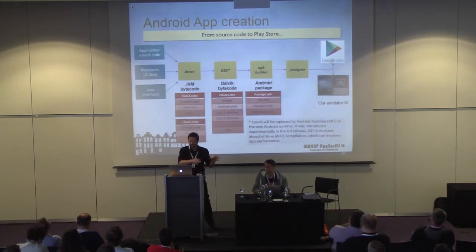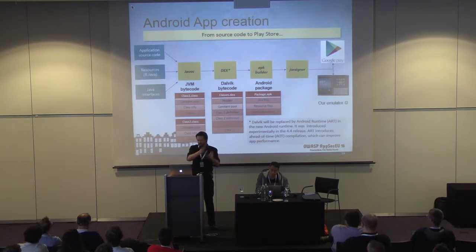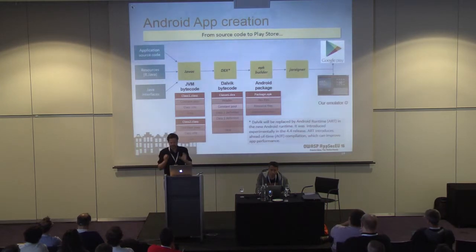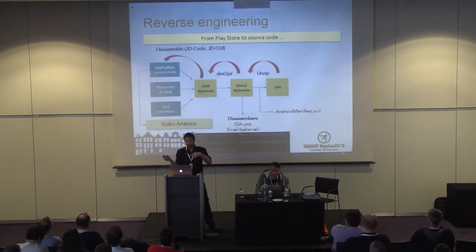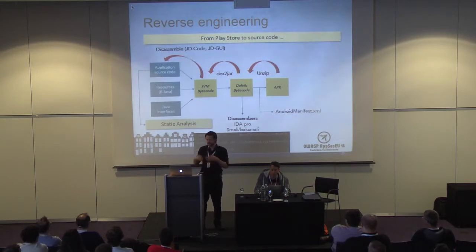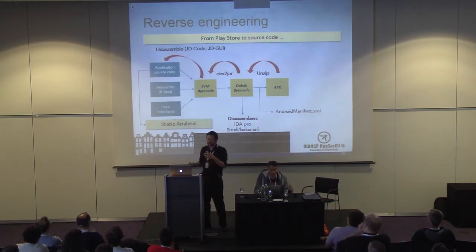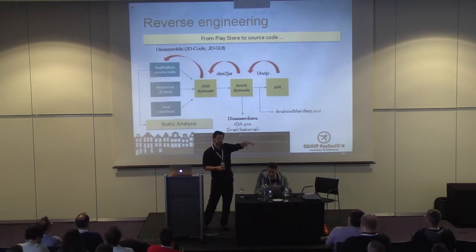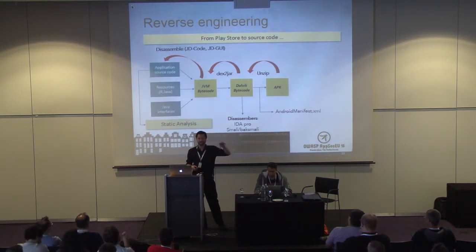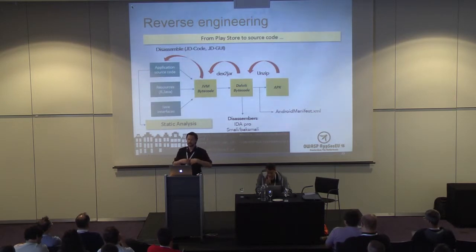A quick reminder: how do you create an Android APK? You take your source, compile it with a Java compiler, produce Dalvik bytecode — very similar to Java — build it into an Android package, sign it, and throw it onto the Google Play Store. Note that Dex is going to be replaced with ART. To reverse it: we take the APK, unzip it to get Dalvik bytecode, use Dex2Jar to go back to Java, and use tools like JD-GUI to look at the Java code for static analysis.